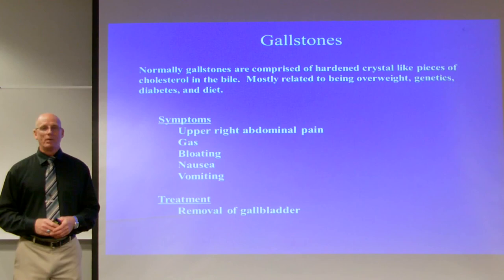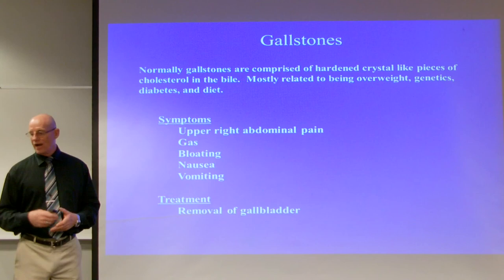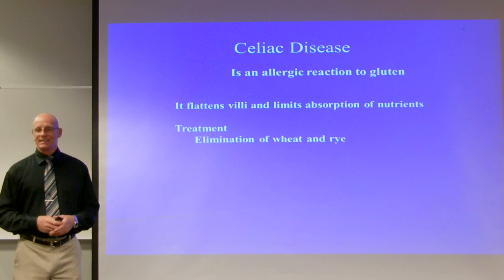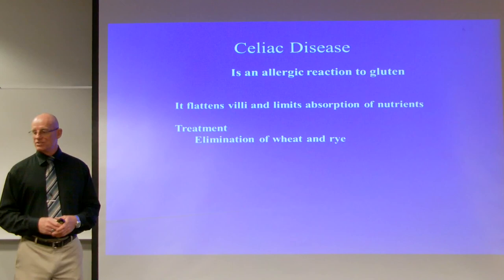Gallstones are normally composed of hardened, crystal-like pieces of cholesterol in the bile. They are mostly related to being overweight, genetics, diabetes, and diet. Symptoms include upper right abdominal pain, gas, bloating, nausea, and vomiting. Treatment is removal of the gallbladder. Celiac disease is an allergic reaction to gluten. Gluten flattens the villi, limiting absorption in the small intestine. Treatment is elimination of gluten through removal of wheat and rye from the diet.